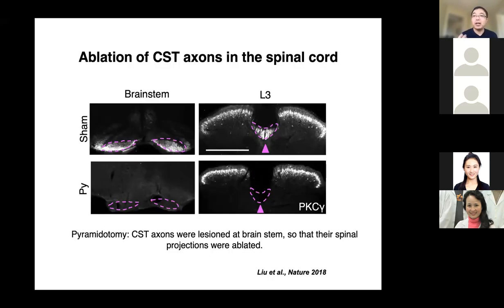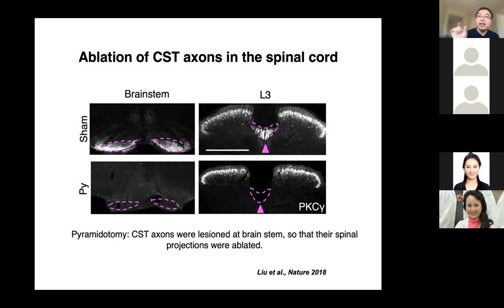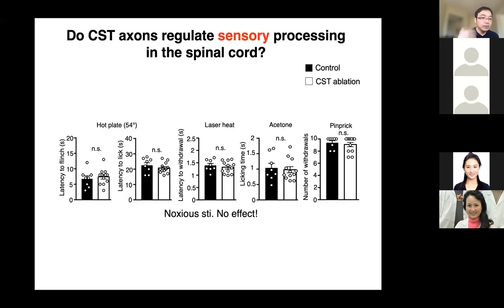To initiate our study, we first performed a surgery called pyramidotomy. This surgery lesions the corticospinal axons at the brainstem level so that their spinal projections are ablated, while the soma, the cell body, and the subcortical projections of corticospinal neurons are left intact. This method allows us to specifically examine the role of the CST axons' spinal projection. Mice with pyramidotomy were then subjected to a battery of sensory tests.